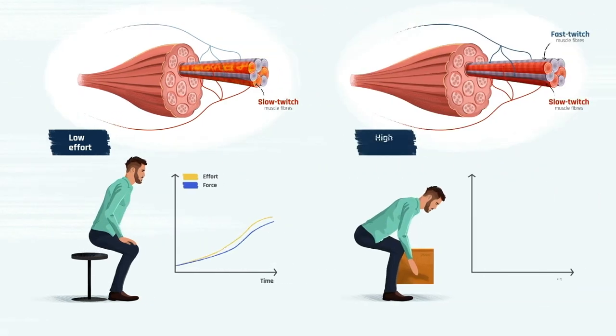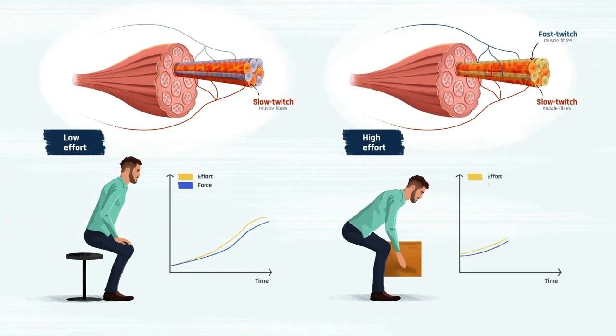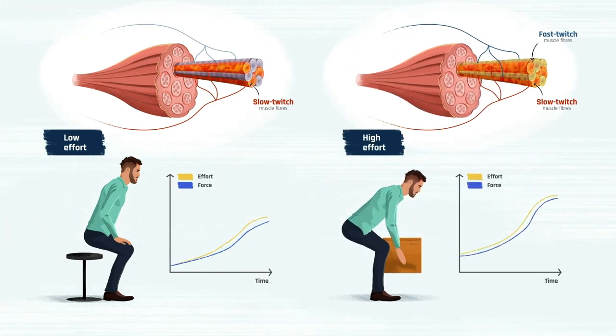When the effort increases, more motor neurons get mobilized, activating also fast twitch fibers and producing a stronger contraction.